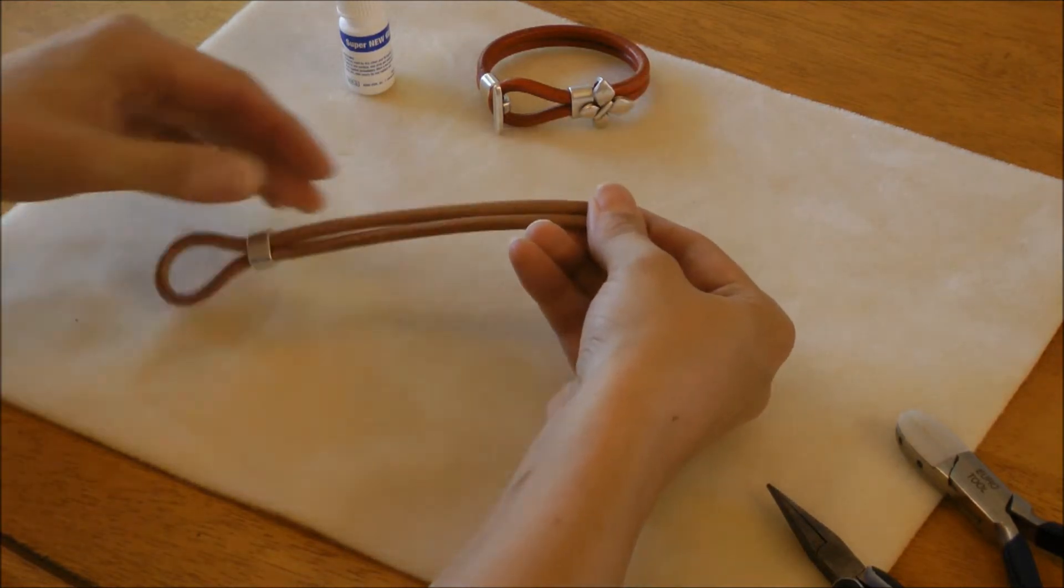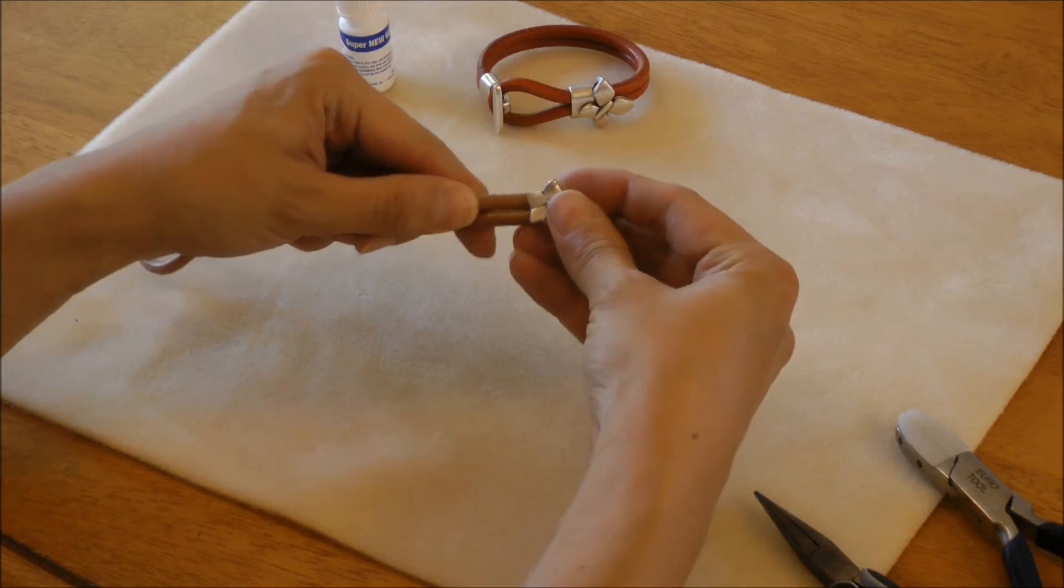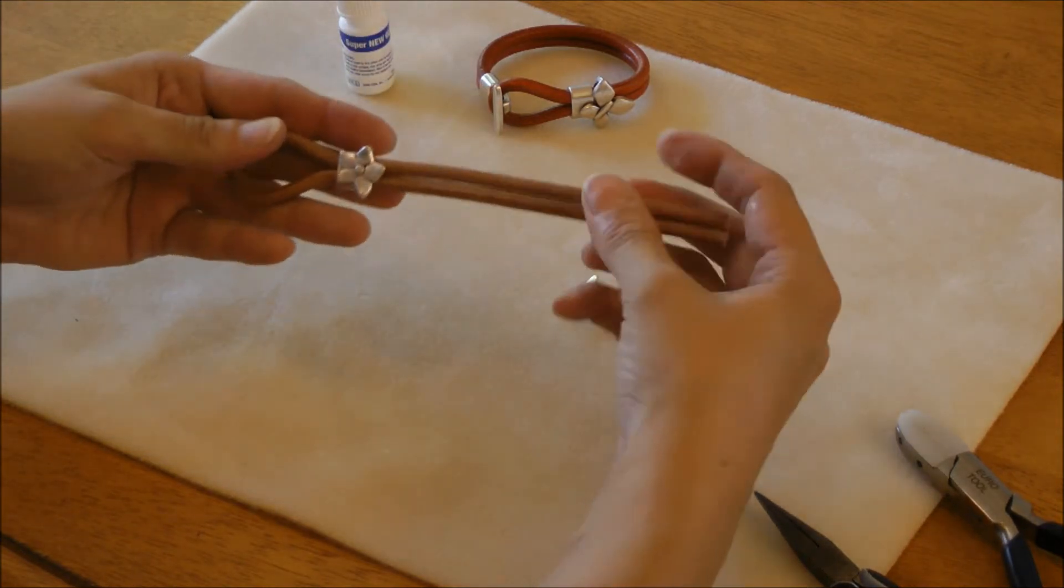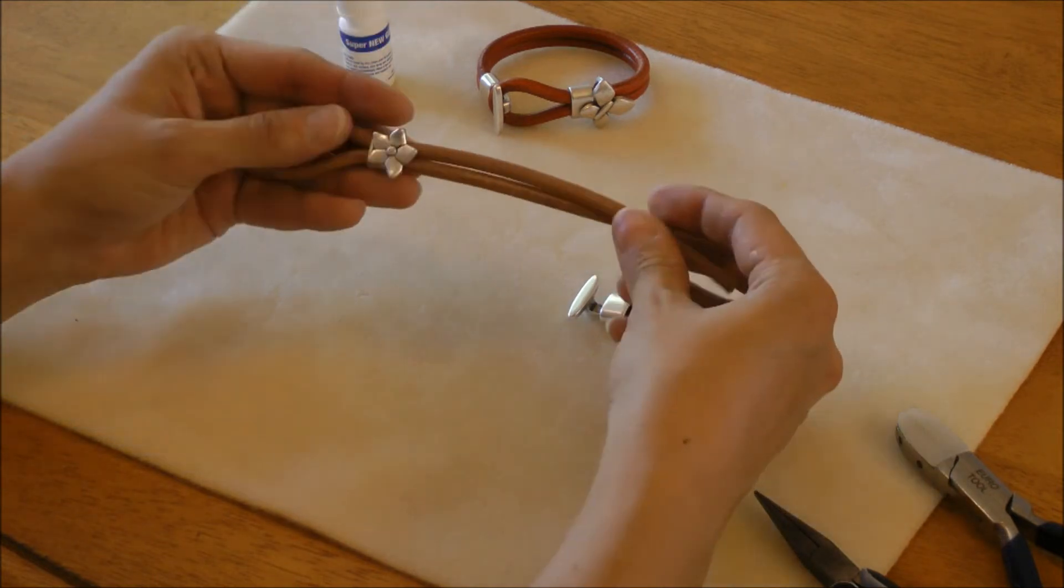Next, you're going to take both of the ends of leather again and slide on your little slider. In this case, the small flower. It slides on right up to that oval piece and actually overlaps the top of it.